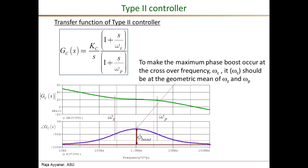To prove this, write the angle contributed by just the pole and zero (not the integrator). The angle of the numerator is arc tan of omega over omega_z, minus arc tan of omega over omega_p for the pole. Then take its derivative with respect to omega, equate that to zero to find the maximum point. We can then show the maximum occurs exactly at the geometric mean.